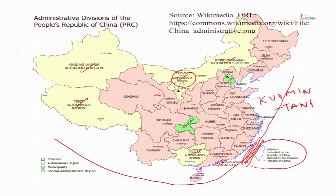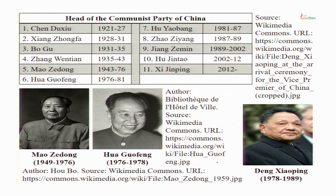So this is the basic overview of the administrative setup of the People's Republic of China. China is ruled by the Communist Party. You have to be very careful here because it is a bit of a complex system. The head of the Communist Party is the most powerful leader in China.